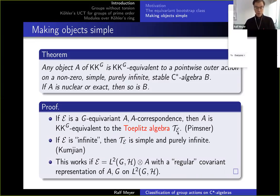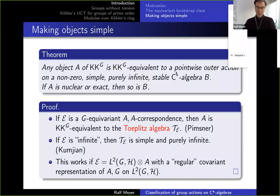The good news is: if you're interested in simple C*-algebras and want to classify them up to isomorphism or KKG equivalence, then simplicity is actually no constraint — because anything can be made simple up to KKG equivalence.